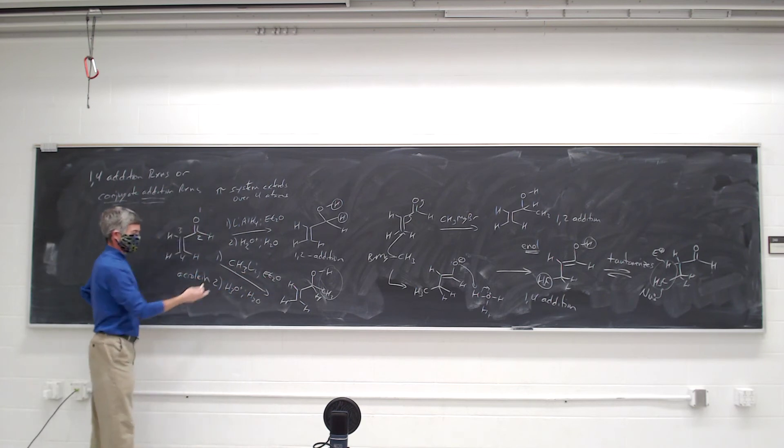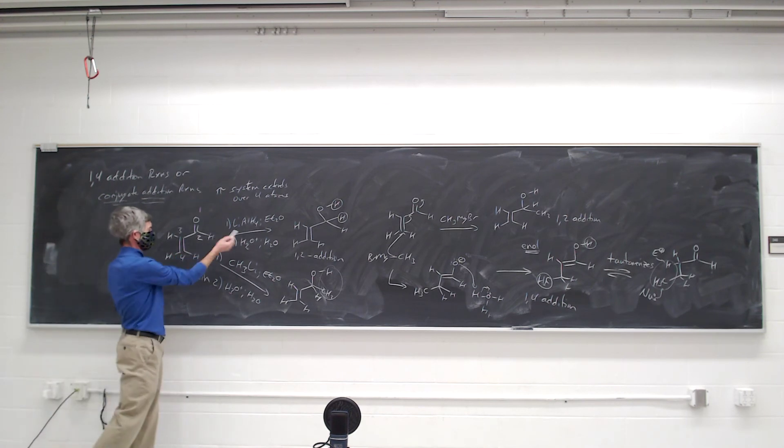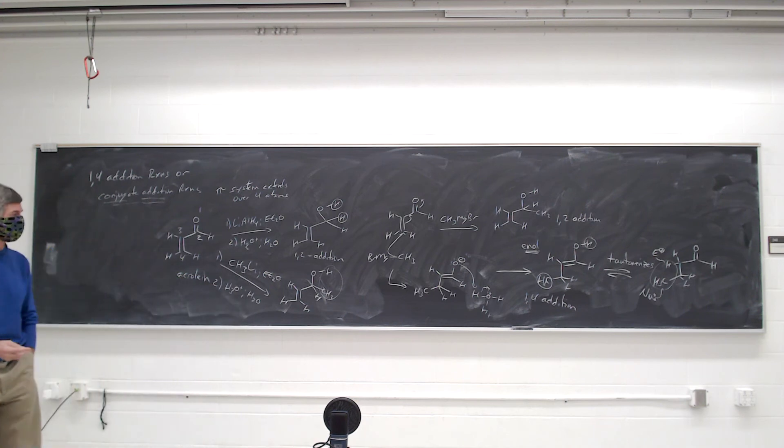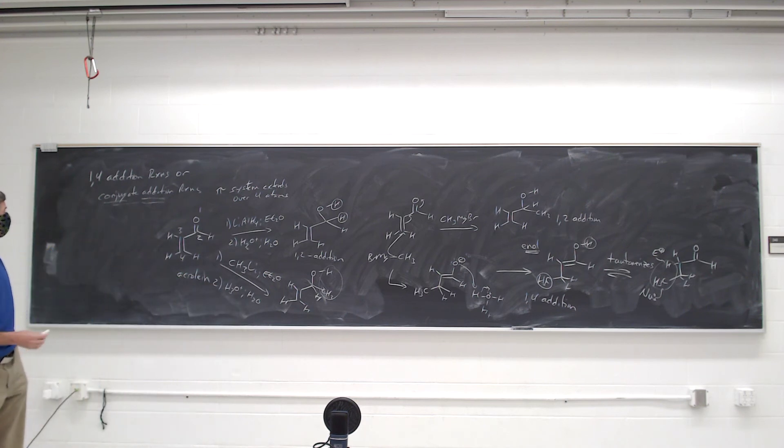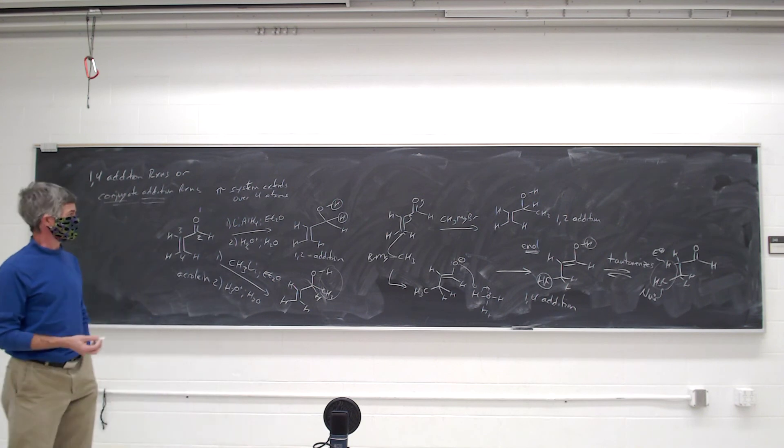Generally these reactions are run in ether and then followed by aqueous acid workup. Lithium aluminum hydride has an aqueous acid workup. Alkyl lithium and Grignard reagents also have that acid workup. So what's the difference between an alkyl lithium and an alkyl magnesium bromide that might cause one to be more selective for 1,4 addition than the other.